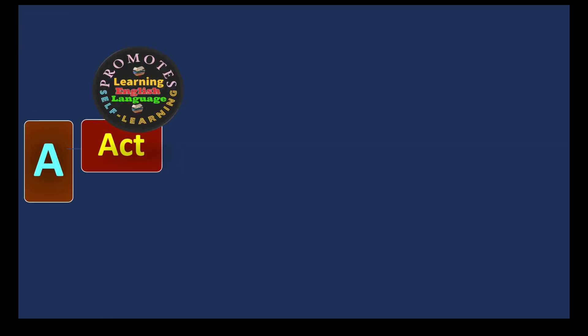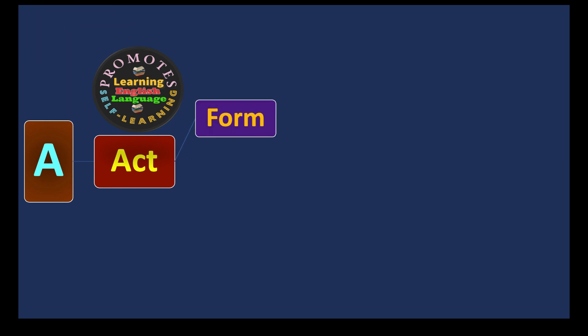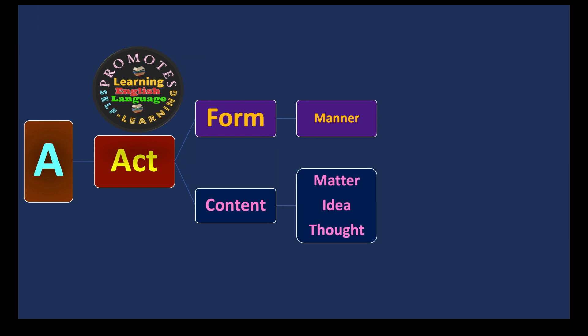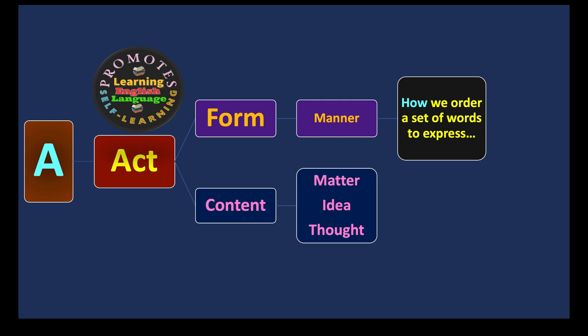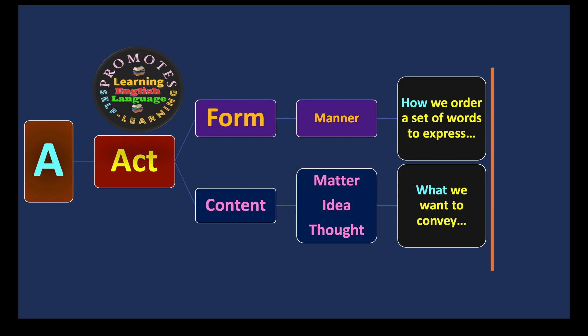A stands for Act, which refers to two things: form and content. Form is about manner — how we order a set of words to express your style and way of speaking. Content is about matter, idea, and thought — what we want to convey, what we want to say and share. Together, meaning is conveyed to the listener and participants.